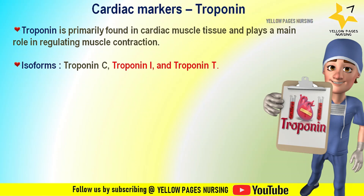In cardiac muscle, there are three main isoforms of troponin: troponin C, troponin I, and troponin T. Each isoform has a specific function and plays a crucial role in regulating muscle contraction. Troponin I and troponin T are the two isoforms commonly measured in clinical practice.